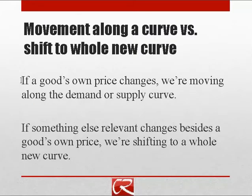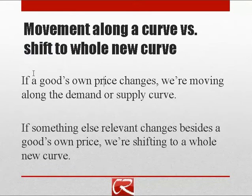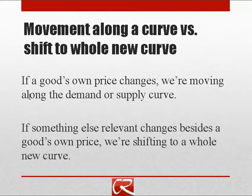I'm going to hammer on this point because it signals how often students struggle with it. We want to distinguish between a movement along a curve versus a shift to a whole new curve. The slope of each curve tells us about the relationship between price and quantity — the downward slope of the demand curve tells us that as prices go up, quantity demanded goes down. So as a good's price changes, we move along the demand curve. But when something else changes besides price and influences demand, like the number of consumers, then we shift to a whole new curve.